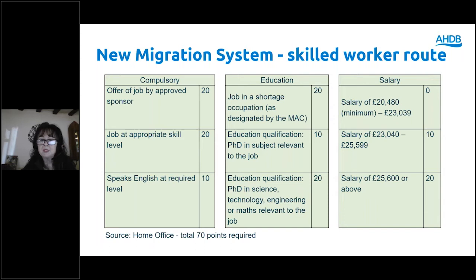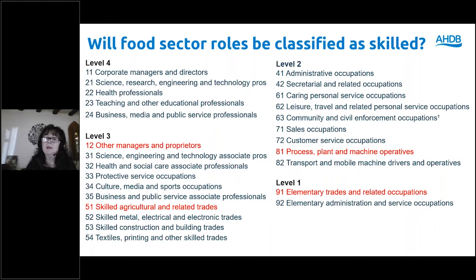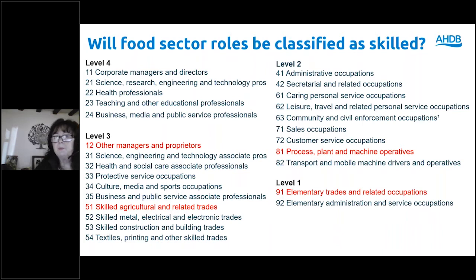To get the maximum points you need to earn above £25,600 per annum. For food sector roles and skill sets, elementary trades such as pickers will only be at level one, so they're not going to qualify on a points-based system. It tends to be managers and proprietors who can qualify on that basis, unless workers come in under the Seasonal Agricultural Workers Scheme.